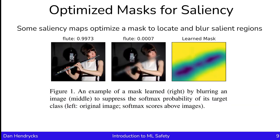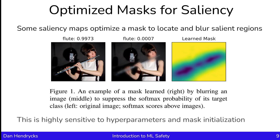A saliency map that is more meaningful tries to optimize a mask that locates and blurs salient regions. It will mask out the salient regions and drive down the confidence in the correct class. This does provide some evidence about what the model is relying on, but still, the saliency map is highly sensitive to hyperparameters — how you do the optimization, how many iterations, exactly what optimizer you use — and it's also sensitive to the mask initialization.